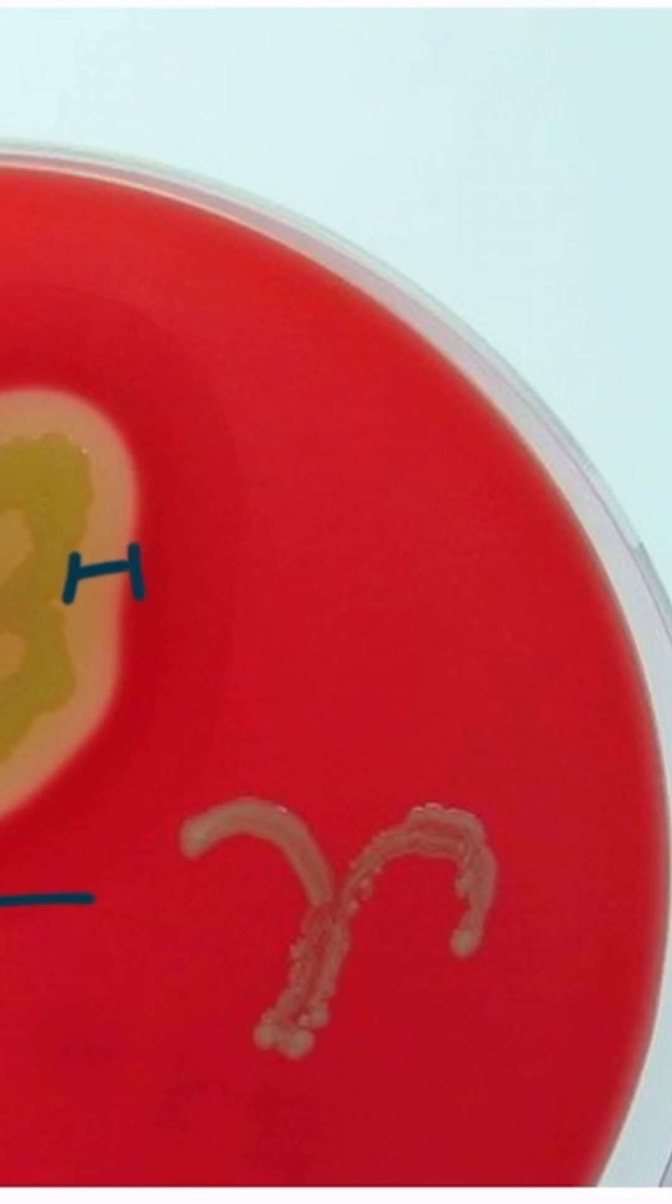On the right side of the plate, we can see the symbol gamma right here. Gamma hemolysis is a little deceptive because these bacteria actually don't hemolyze the red blood cells at all. That's why there's no clearing seen around these colonies.